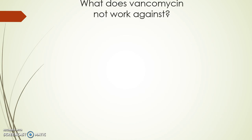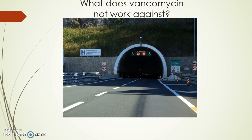So what does vancomycin not work against? Gram-negative bacteria have a double cell wall, which means it is difficult to move nutrients in and out. Porin proteins help with this and are like rickety bridges or small tunnels that only allow small trucks through. Vancomycin is huge and does not fit.